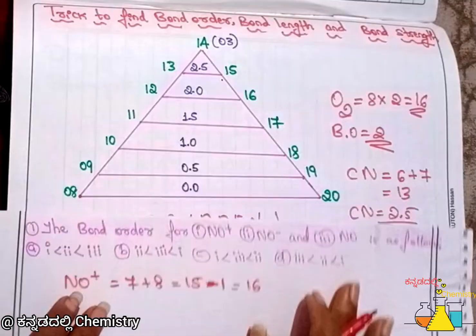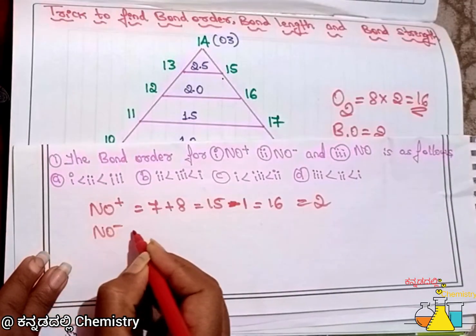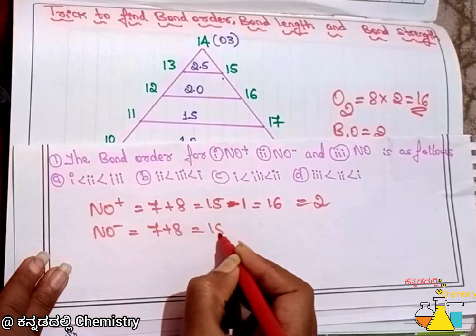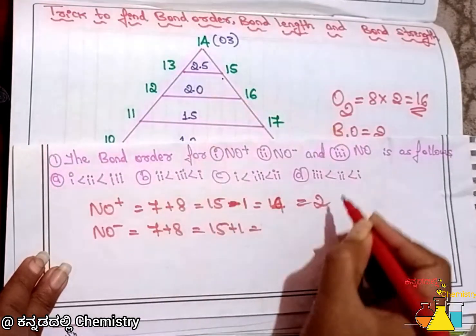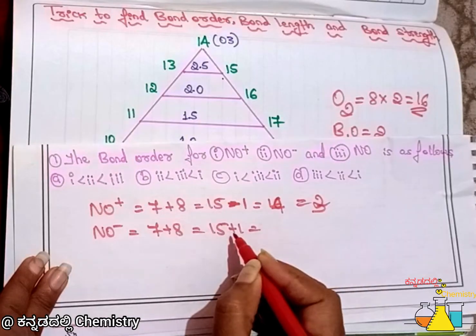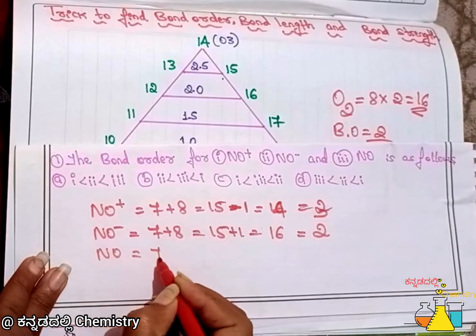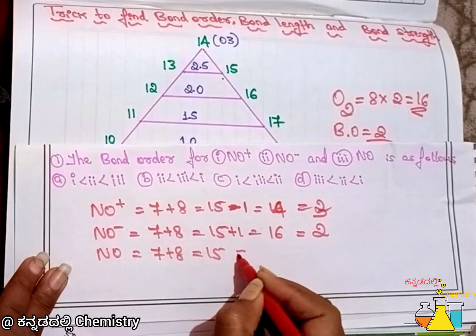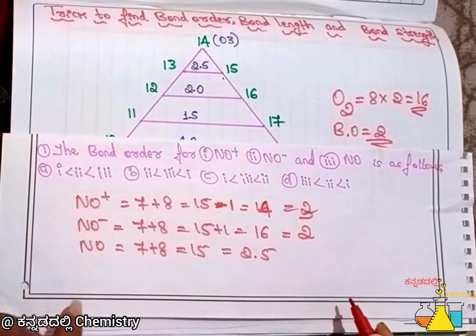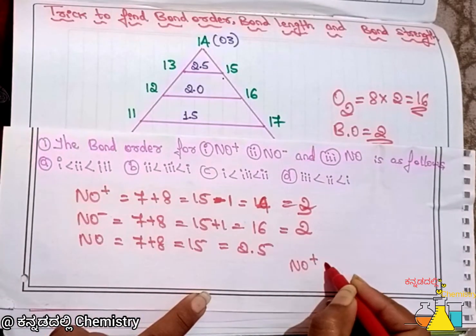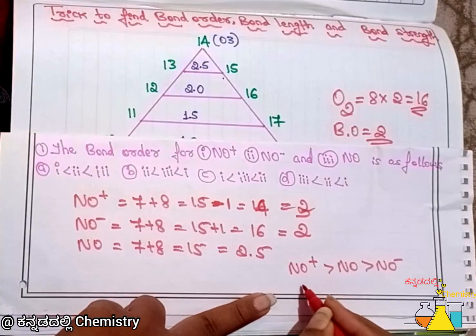For NO+: 15 minus 1 equals 14 electrons, giving bond order 3. For NO−: 15 plus 1 equals 16 electrons, giving bond order 2.5. For NO: 15 electrons, giving bond order 2.5. So the order is NO+ > NO > NO−.